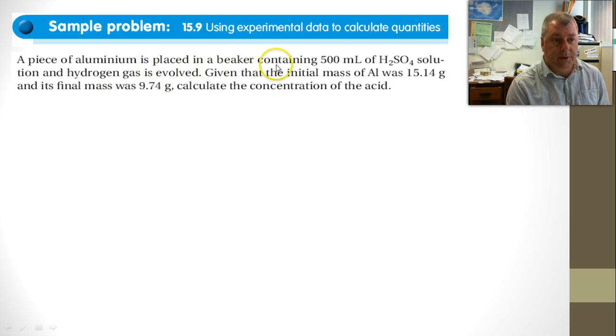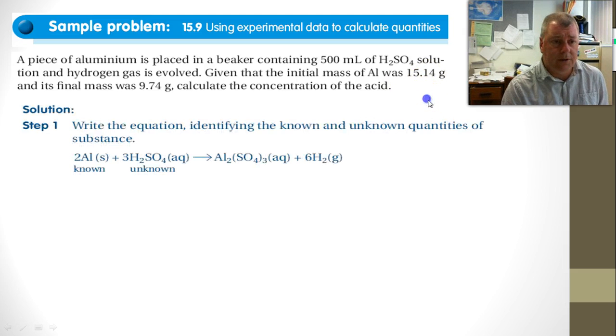A piece of aluminum is placed in a beaker containing 500 milliliters of sulfuric acid, and hydrogen gas is evolved, generated, bubbles off. Given the initial mass of the aluminum is 15.14 grams, and its final mass is 9.74 grams, calculate the concentration of the acid. So this is a little bit trickier, and we've included this one in just because it is a little bit trickier.